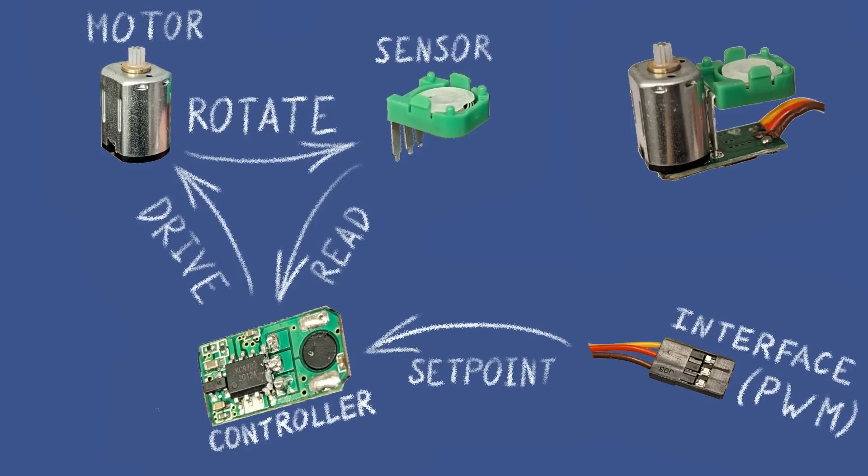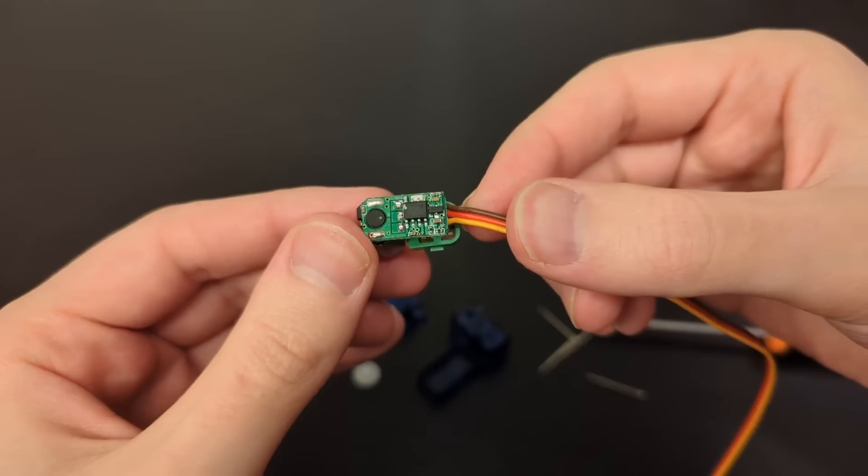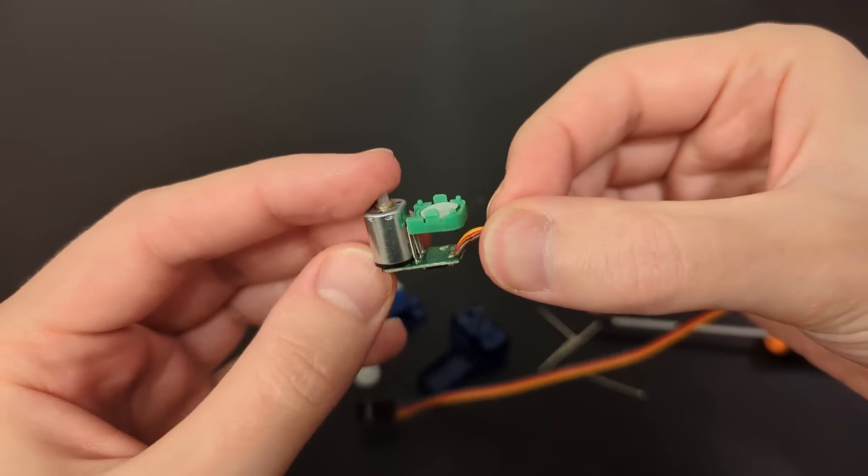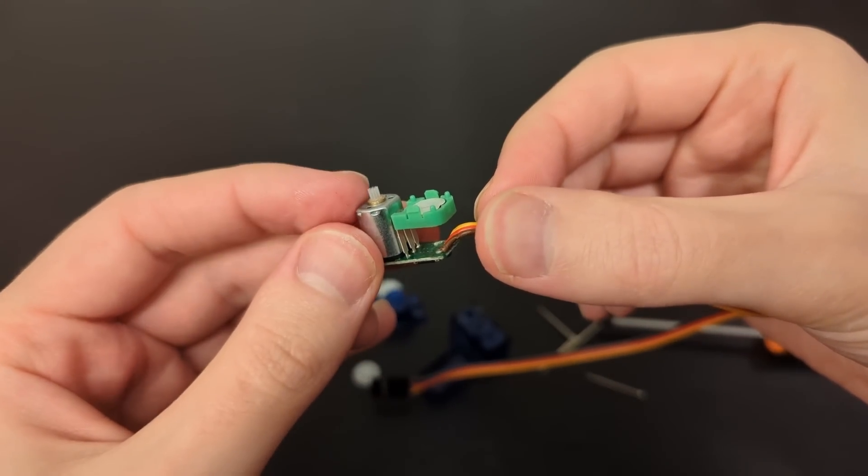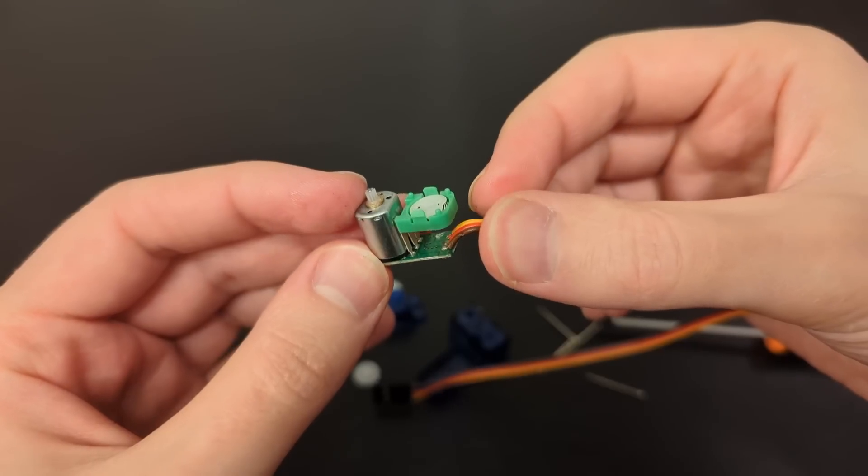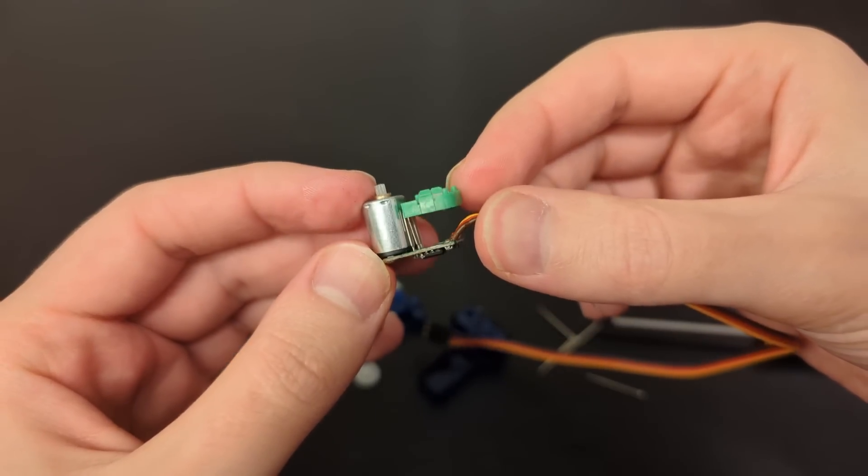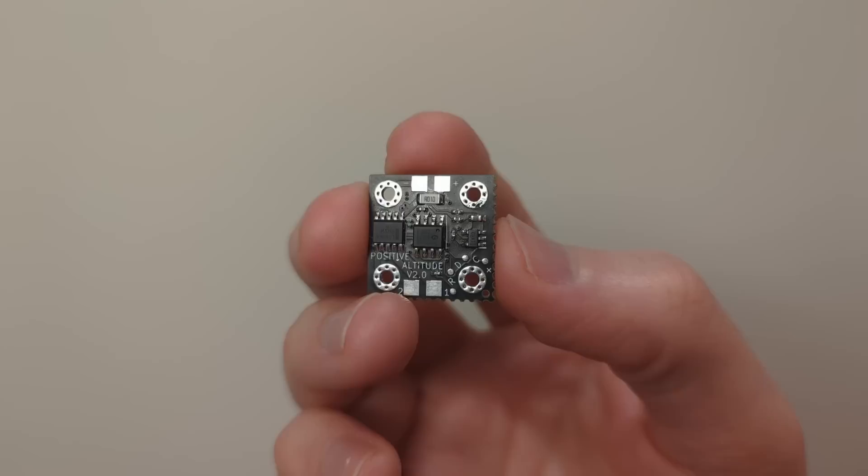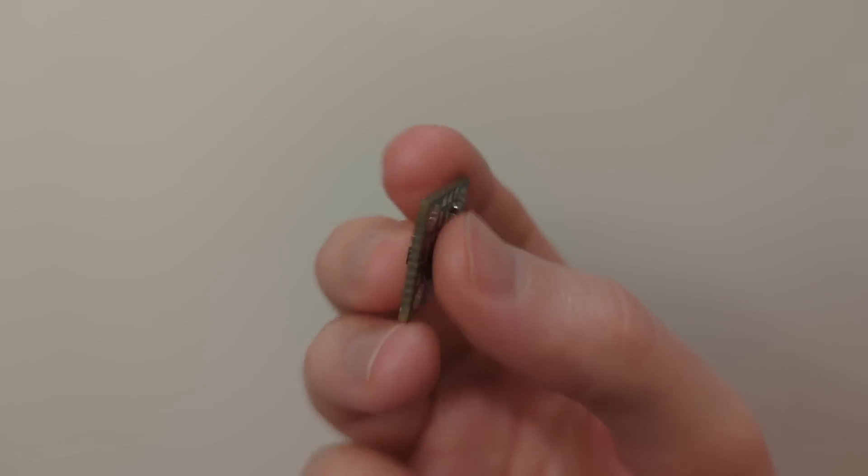There is a great variety of how a servo motor could be implemented. Various types of motors, sensors, and control algorithms could be used. The regular hobby servo motor uses a brushed DC motor, a variable resistor as a position sensor, and the communication interface is a PWM signal. The control system is made with a specialized analog chip that combines both logic and a motor driver.